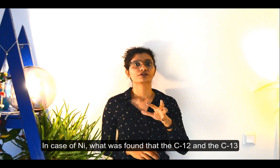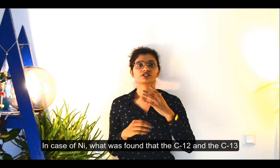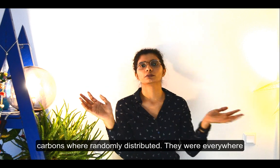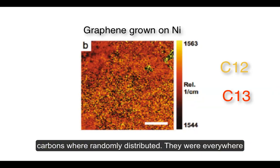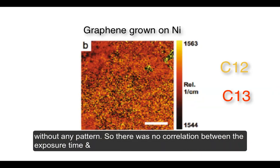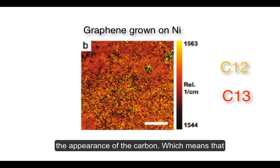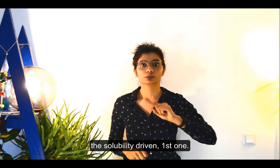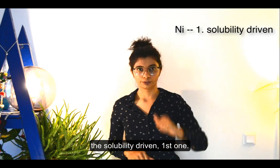In the case of nickel, it was found that the C12 and C13 carbons were just randomly distributed — everywhere, without any pattern. There was no correlation between the exposure time and the appearance of the carbon, which means the mechanism dominating in nickel is the solubility-driven one.